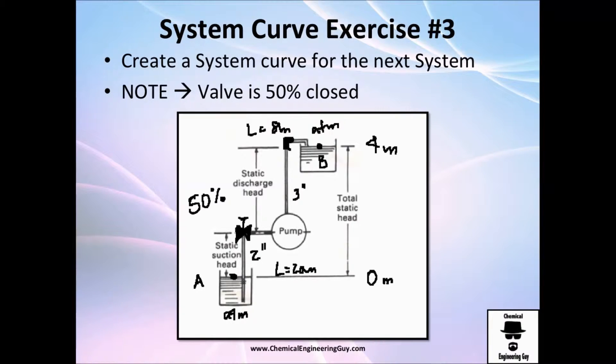This is our last exercise on the system curve, exercise number three. We're going to analyze what happens when we change a valve from maybe 100% open to 50% open.